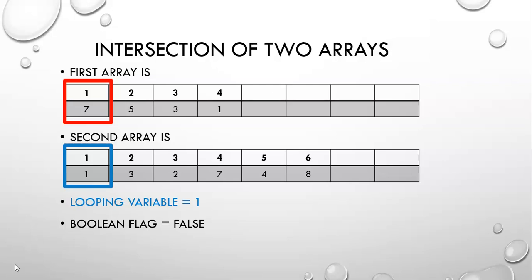Once we've gone from one through four and checked all four of those numbers, we know we're done. Now we're in our second loop, which is the blue value. We set it to one, set the flag to false, and loop through the second array until one of two things happens: the moment we find a match, we can stop looking because we found what we're looking for, or we reach the end of the second array. If we reach the end, there's nothing else to look for — we've gone through everything and have not found a matching value.